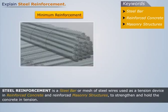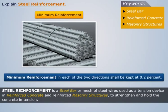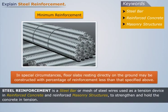Minimum reinforcement. Minimum reinforcement in each of the two directions shall be kept at 0.2%. In special circumstances, floor slabs resting directly on the ground may be constructed with a percentage of reinforcement less than that specified above.